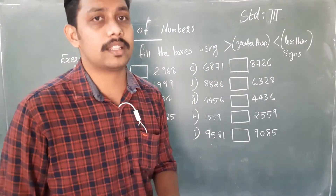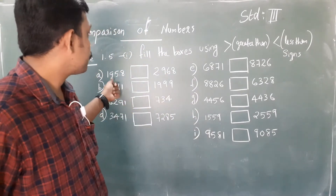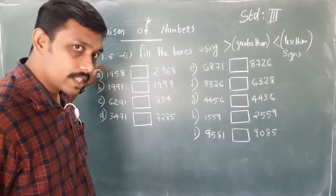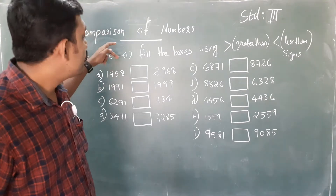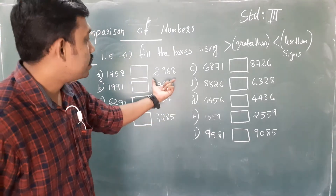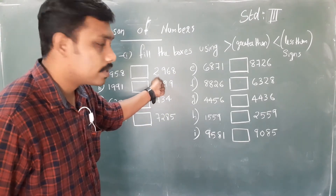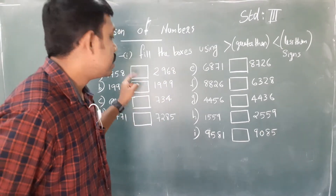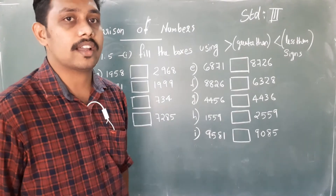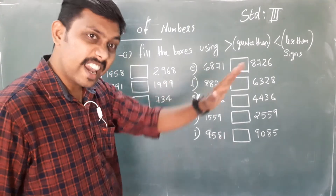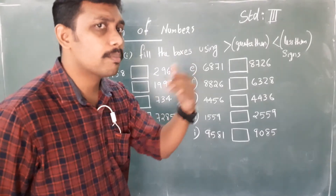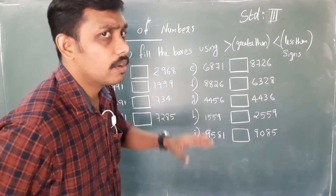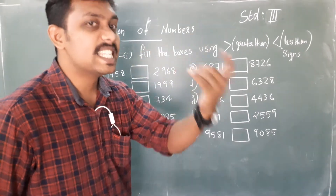First we have to compare the numbers. Look at the first problem: 1958 and 2968. Check the number of digits — this is a four-digit number and this is also a four-digit number. So we cannot apply the first rule; we will apply the second rule.